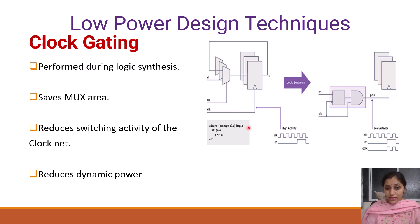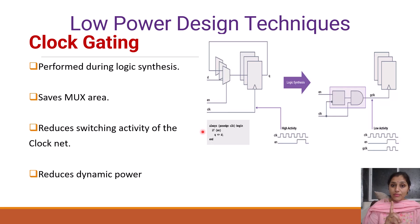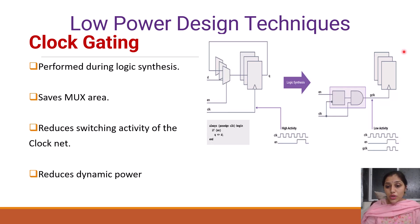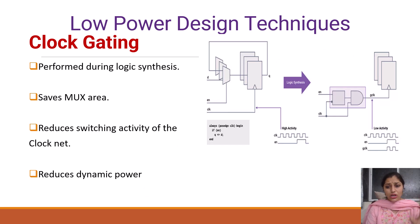In the previous case, even if enable is not active — even if enable is 0 — we get no new output, but the circuit continuously receives the clock. Whereas here, the circuit will not receive any clock at all. This reduces the switching activity of the clock net. In dynamic power dissipation, power dissipation occurs due to short circuit and due to switching. By reducing switching activity, clock gating reduces dynamic power.